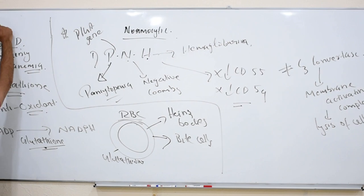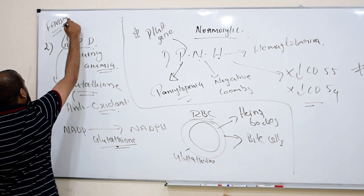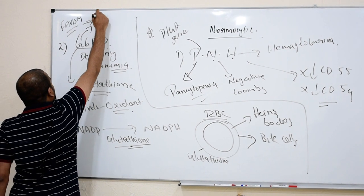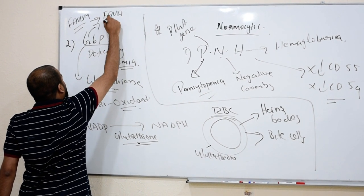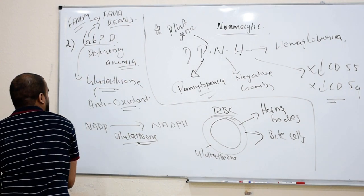Remember this G6PD deficiency anemia is also called favism, because if this child will eat a bean called fava beans, they will have more problems, they will have more hemolysis. So never give them fava beans. It's a type of bean that can increase the severity of this anemia.